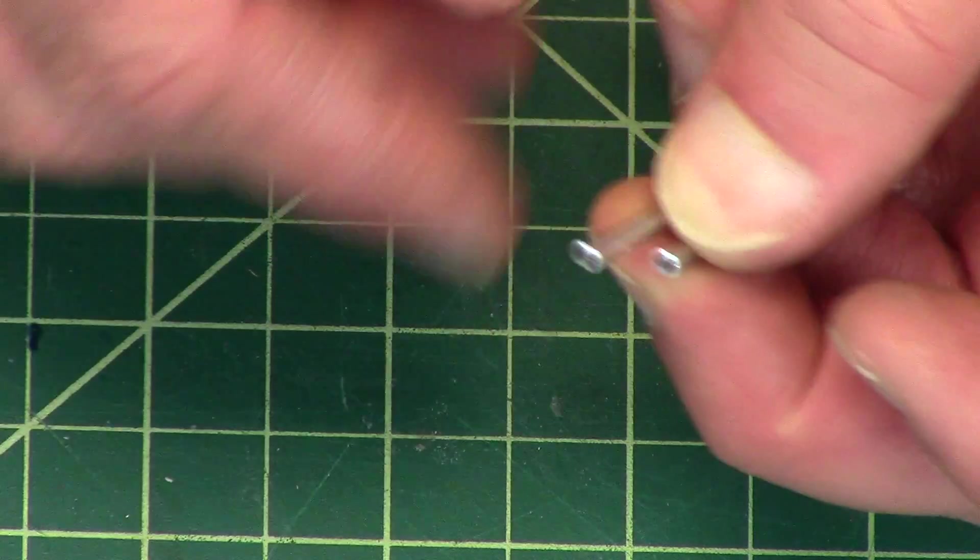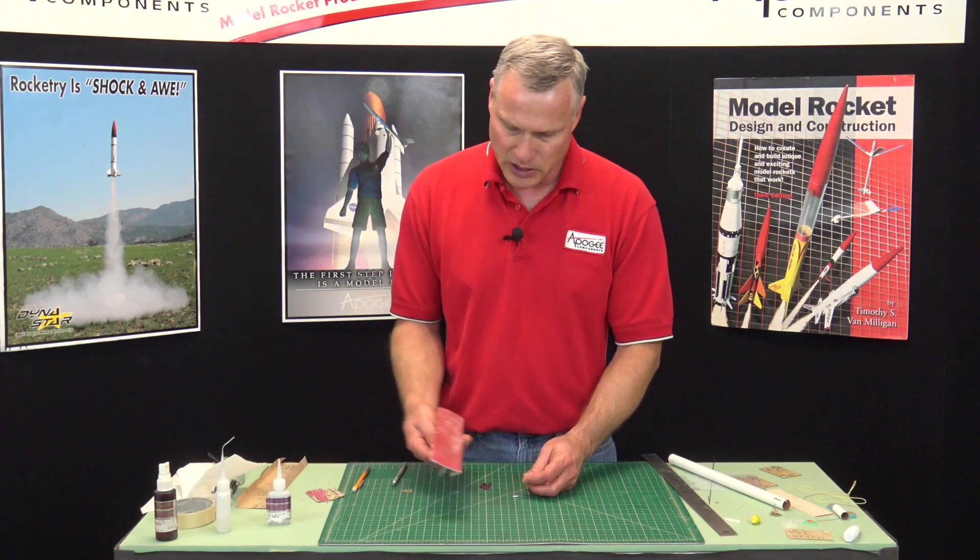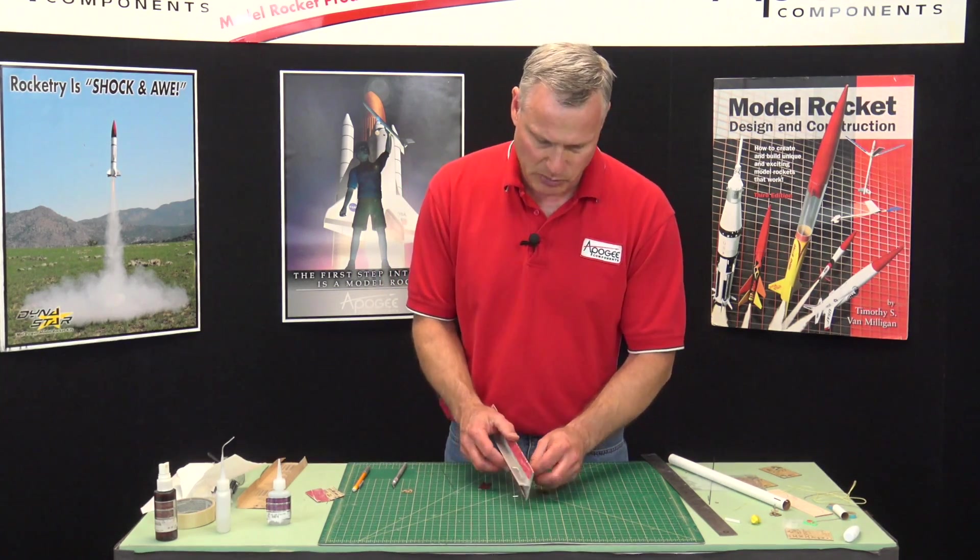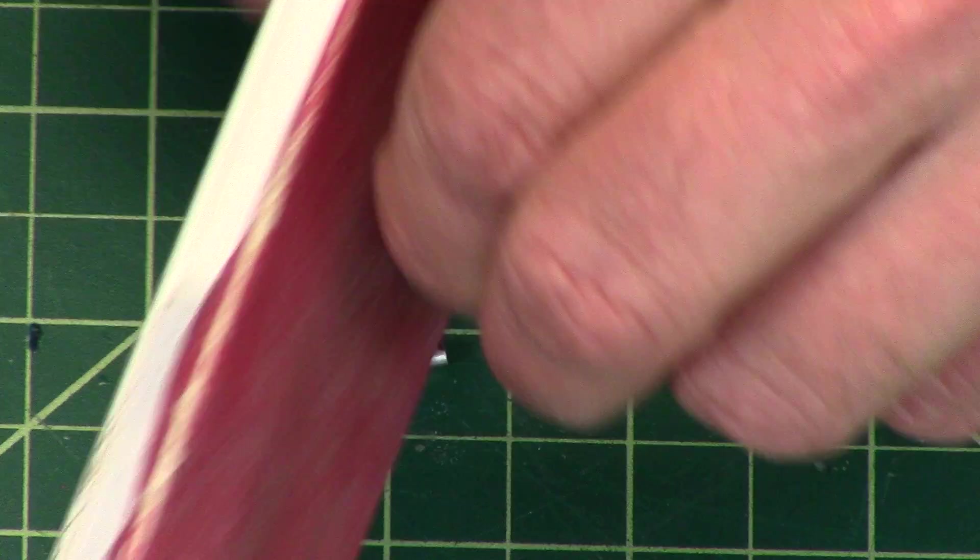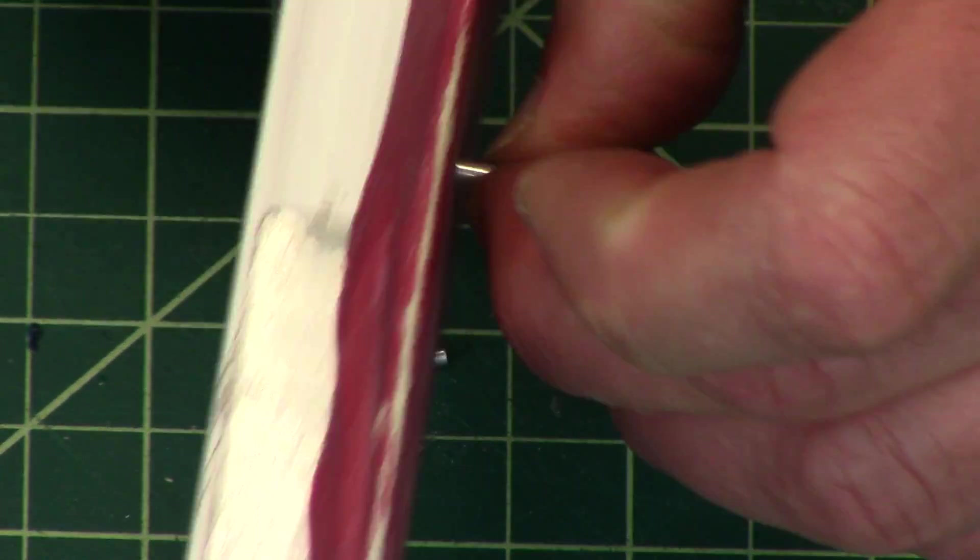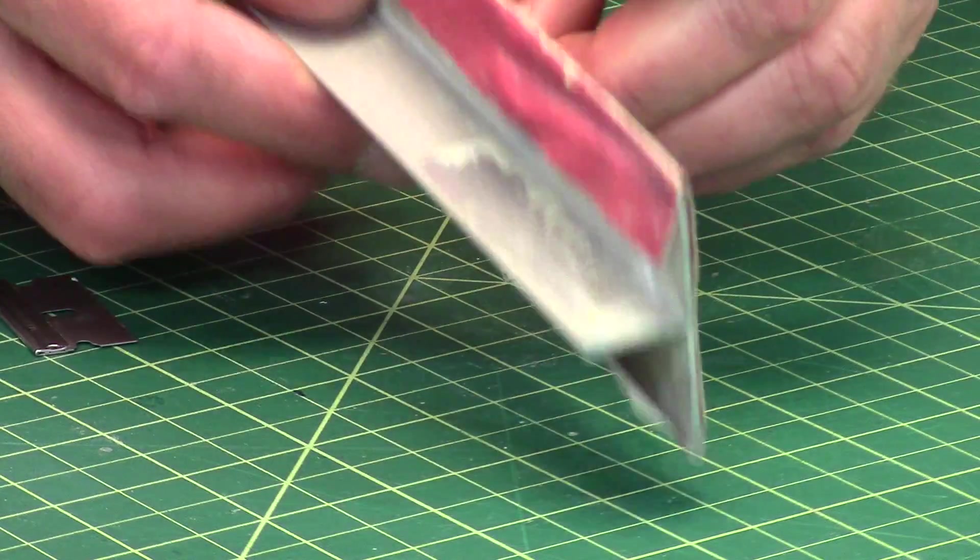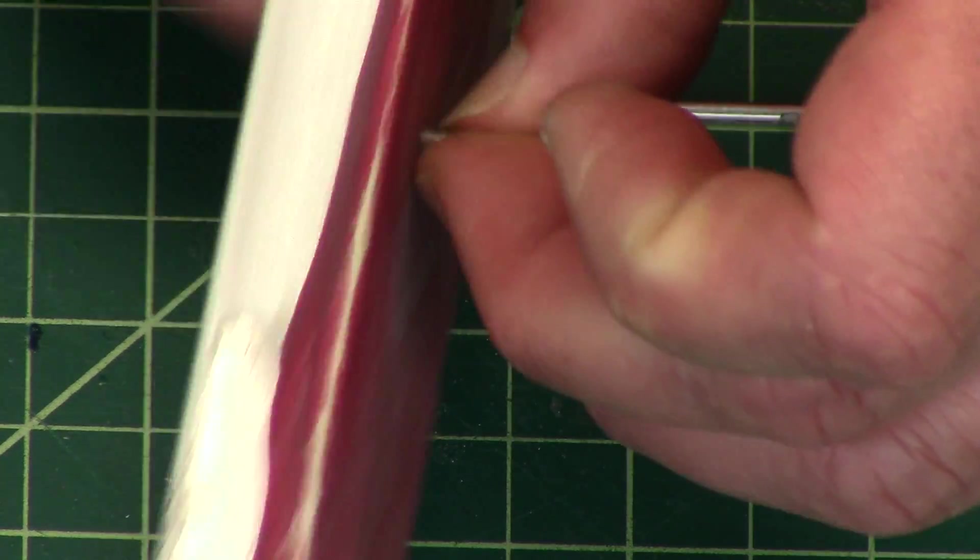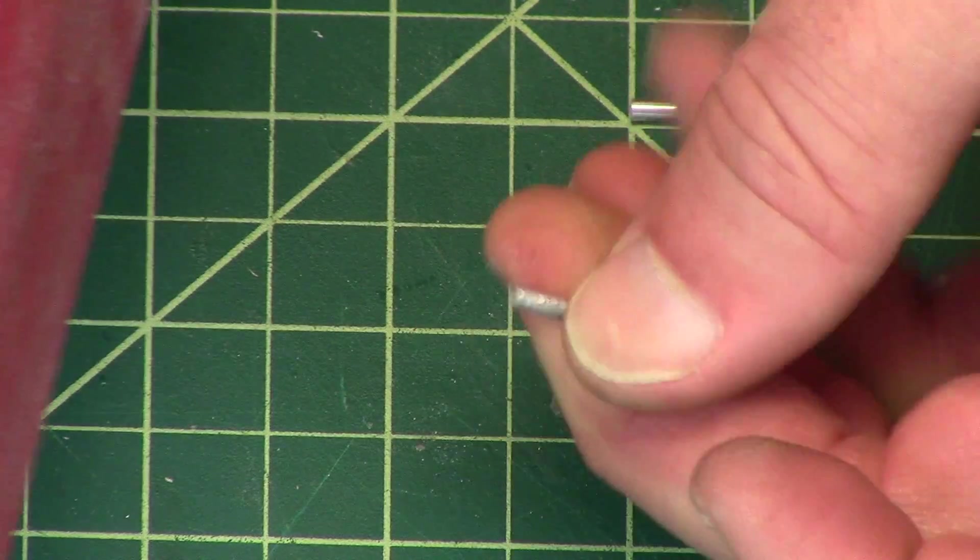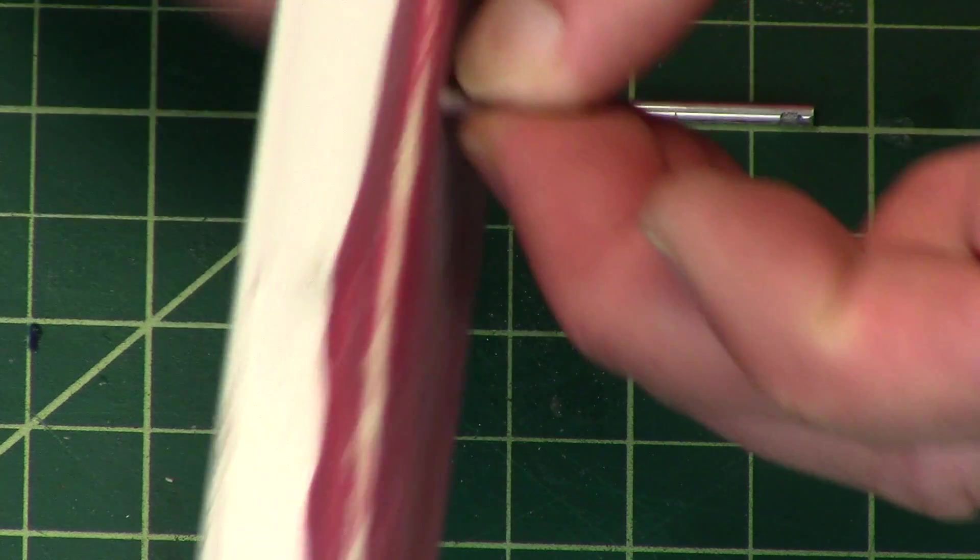Now I need to square up those ends on both pieces, the short piece and the long piece. I've got some 220 grit sandpaper here, and I'm just going to do a circular motion on both pieces. I'm rolling this between my fingers to make it a little easier.